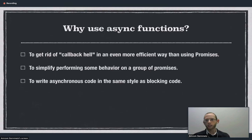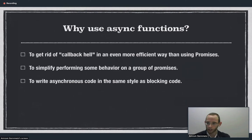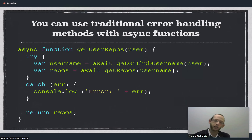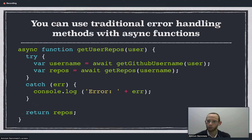So why use async functions? To get rid of callback hell in an even more efficient way than using promises, to simplify performing some behavior on a group of promises, and to write asynchronous code in the same style as blocking code. Another great thing about async functions is that you can use traditional error handling methods. When you use promises, there's a whole new pattern of error handling with catch or the reject function. With async functions, you can use just the traditional try-catch since it's all written in the ordinary function style, so that catch will just handle any errors.